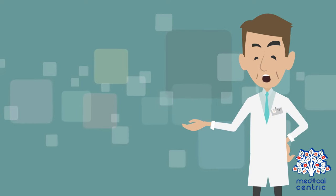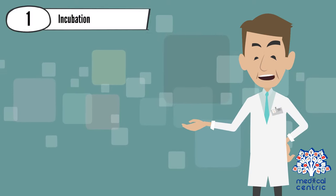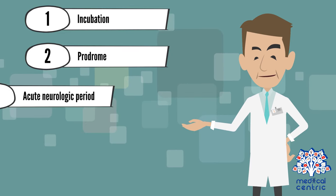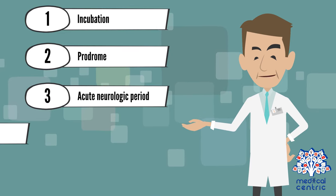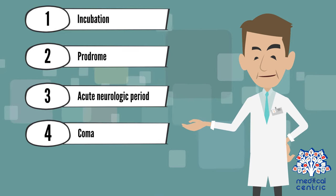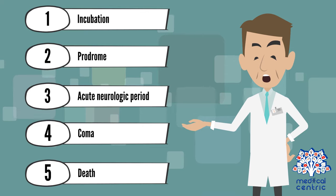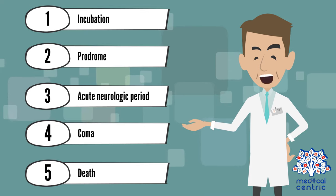Rabies progresses in five distinct stages: incubation, prodrome, acute neurologic period, coma, and death.